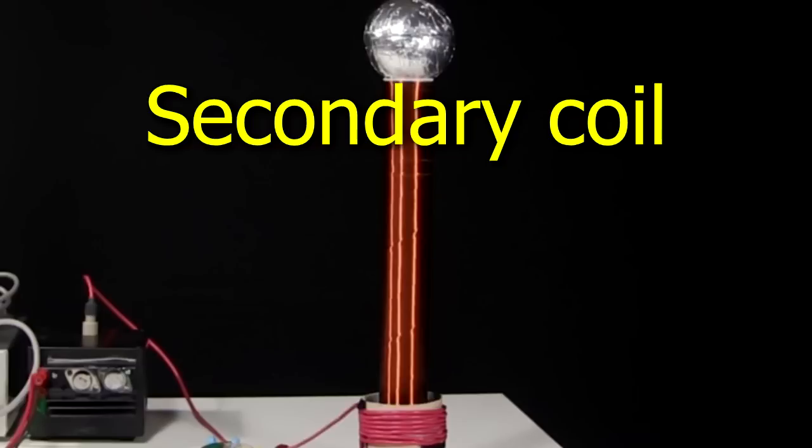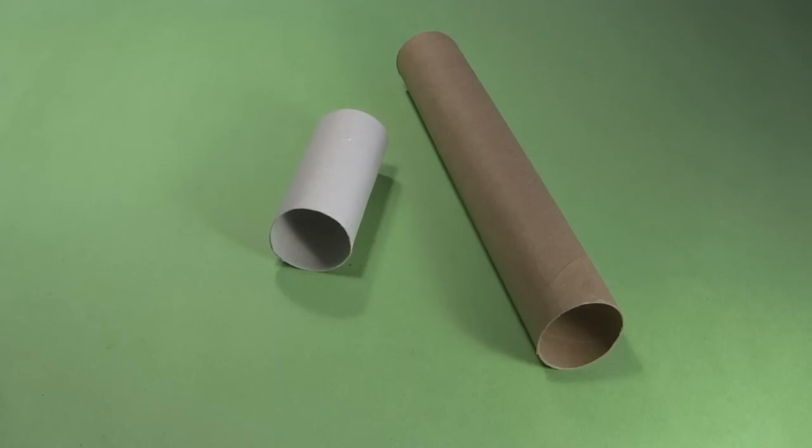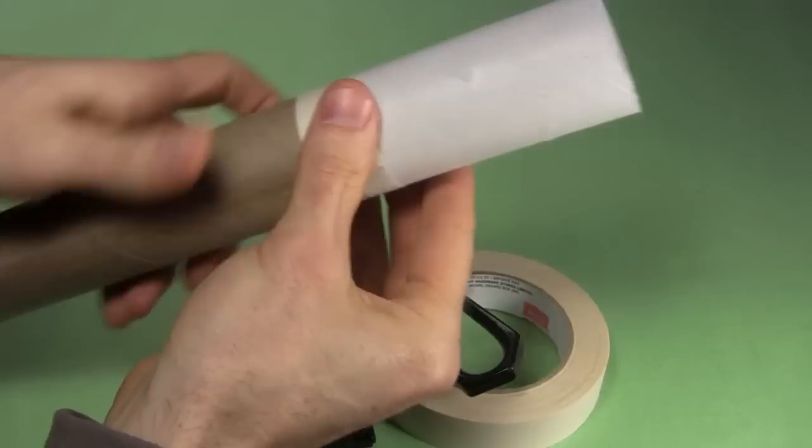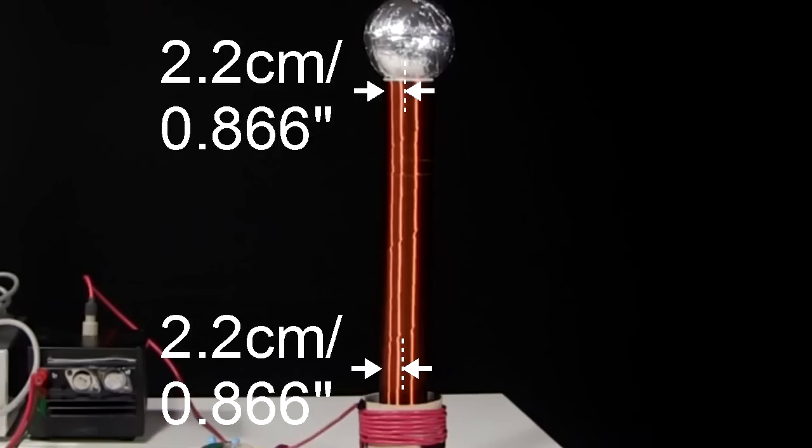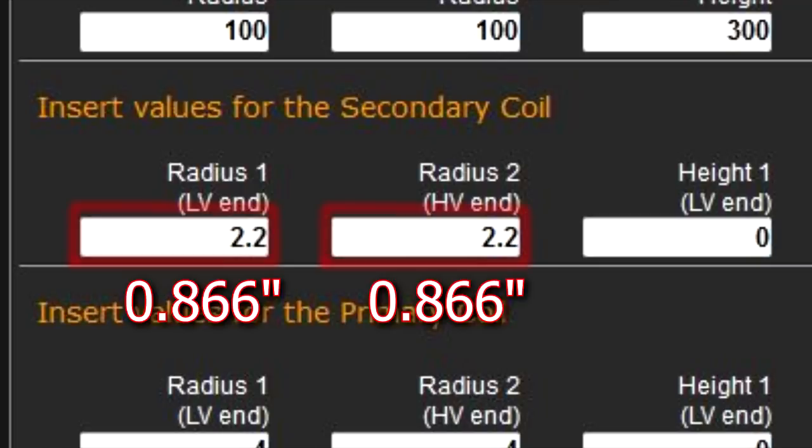Now to start making it. First, the secondary coil. Since they're easy to find, I decided to use a paper towel tube and a toilet paper tube taped together. The top and bottom radius are both 2.2 centimeters, and that goes in the calculator here.